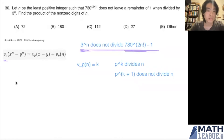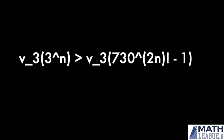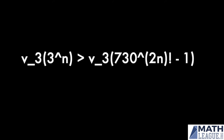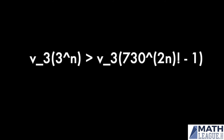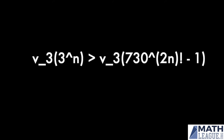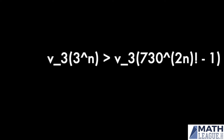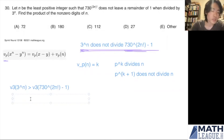Since we want 3^n to not divide the right-hand side, we want v_3(3^n) to be greater than v_3(730^(2n!) - 1). The left-hand side simply equals n, and for the right-hand side we'll now see how LTE comes in.